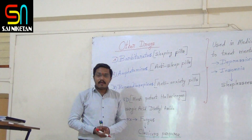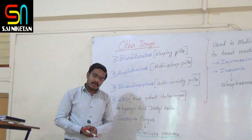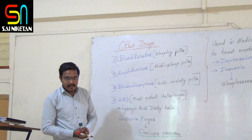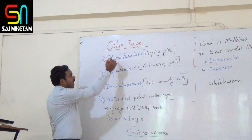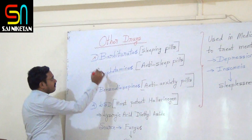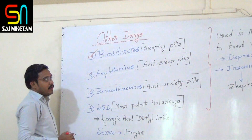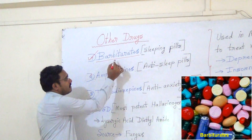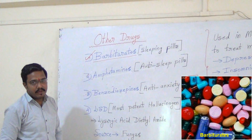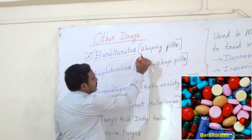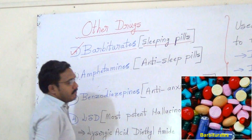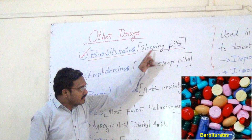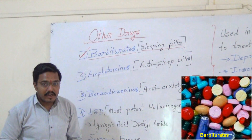Today we talk about other drugs. We have already talked about common abuse drugs. Now let us study about other drugs. The first one is barbiturates. Barbiturates are sleeping pills — they induce sleep. So sleeping pills are nothing but barbiturates.